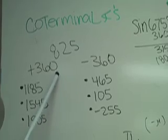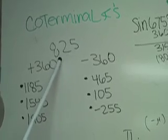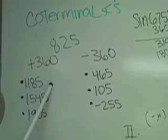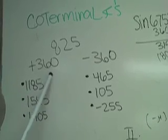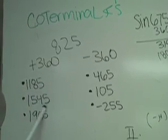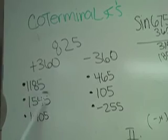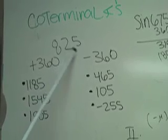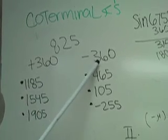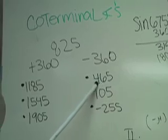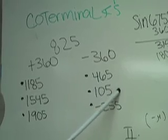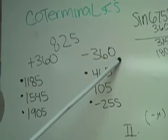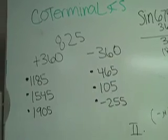So for example, if you add 360 to 125, you'll get 485, and then you add 360 to this number and get this number, and so on. Or you could subtract from 825 to 465, and then from 465 you subtract 360, and get this, and so on.